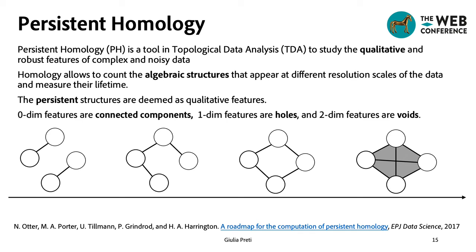Persistent homology is a tool using topological data analysis to detect qualitative features in complex data. The data is analyzed at different resolution scales, with the goal of finding which structures persist through the process. The most persistent structures are the qualitative features of the dataset.